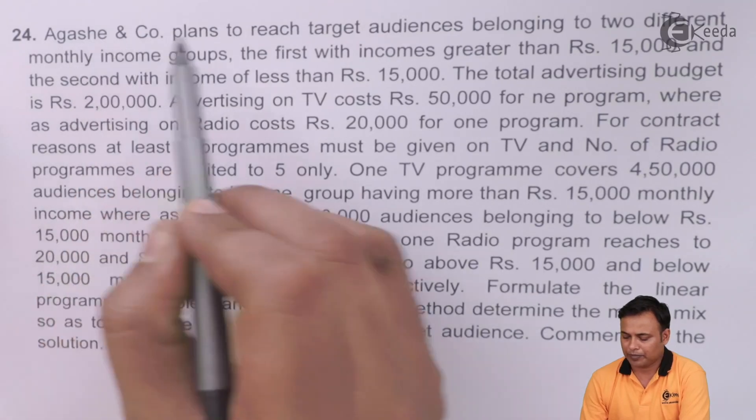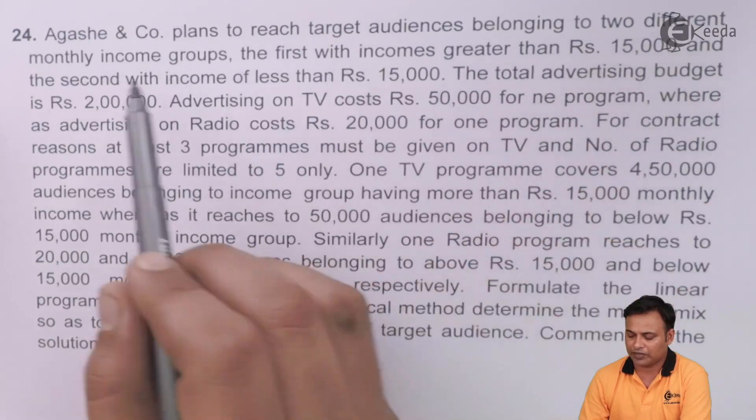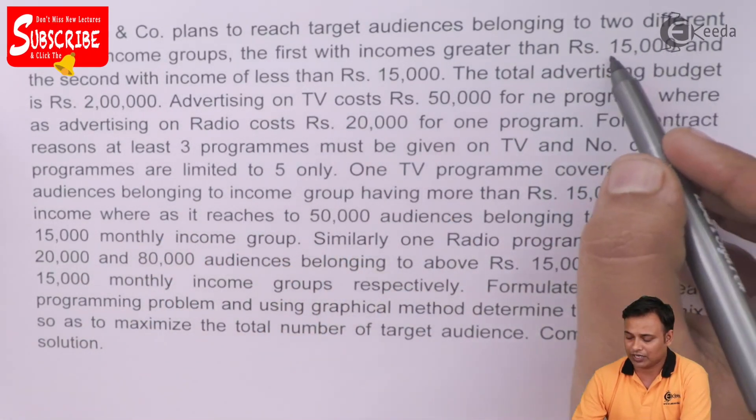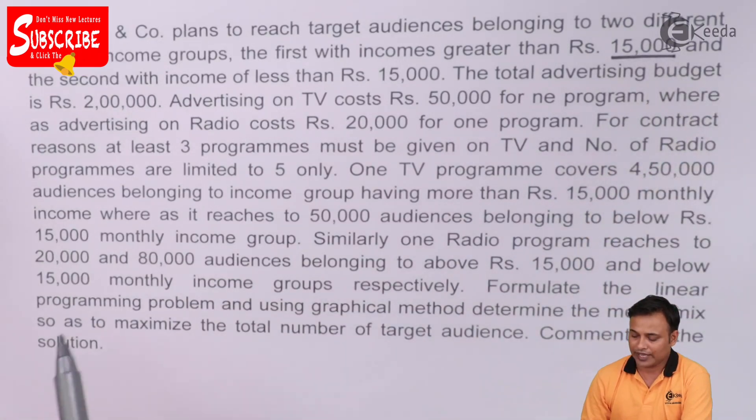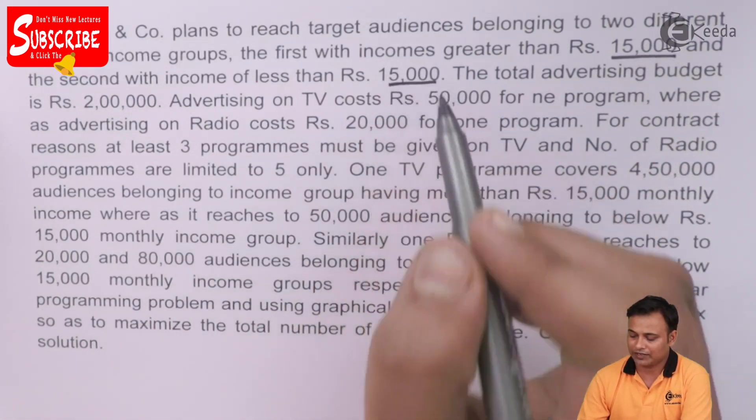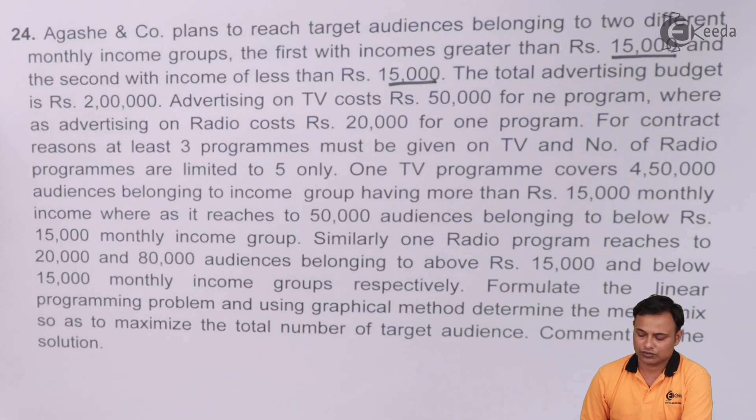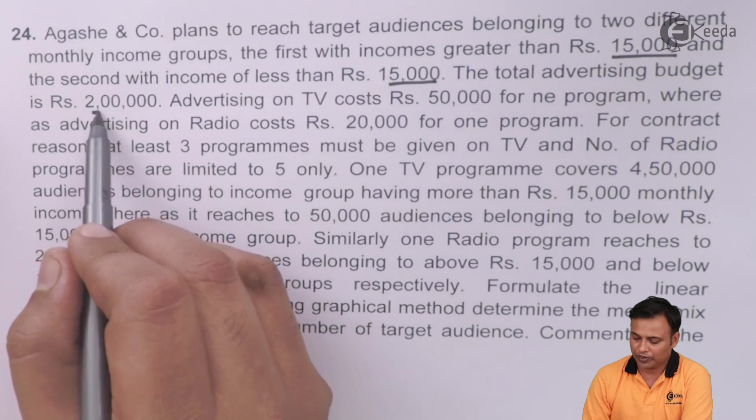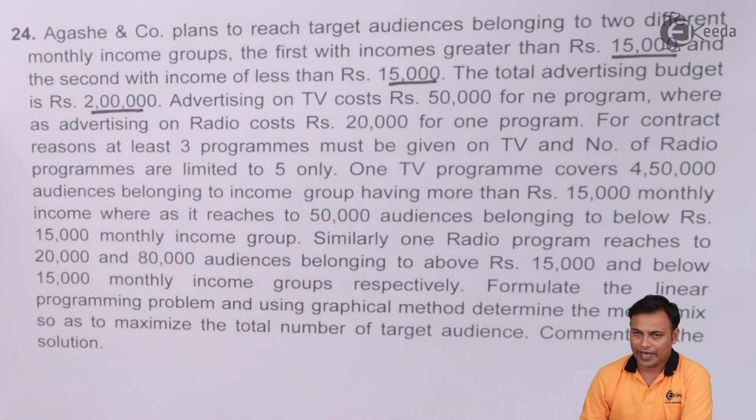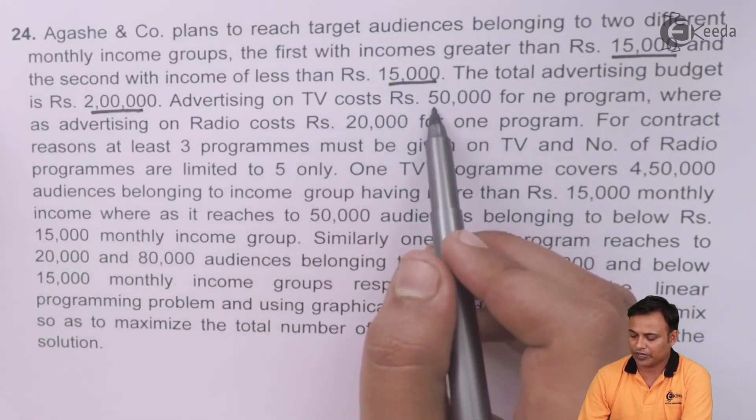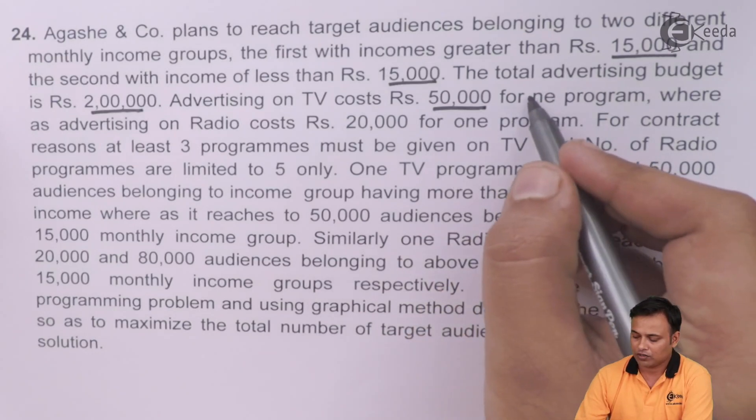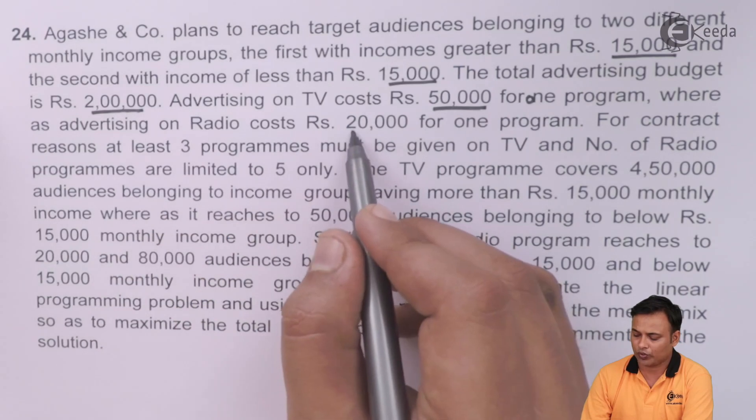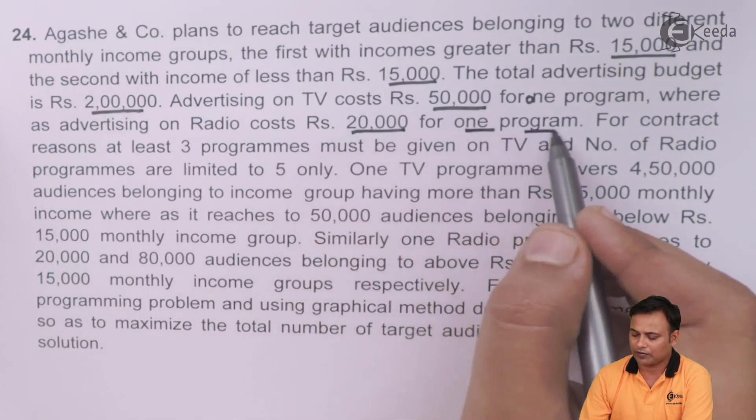Agashe and company plans to reach target audiences belonging to two different monthly income groups. The first with income greater than Rs. 15,000 and the second with income less than Rs. 15,000. The total advertising budget is Rs. 2 lakhs. Advertising on TV costs Rs. 50,000 for one program, whereas advertising on radio costs Rs. 20,000 for one program.